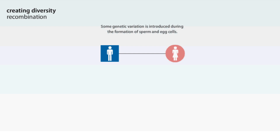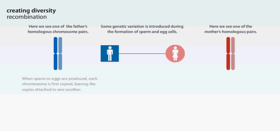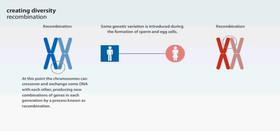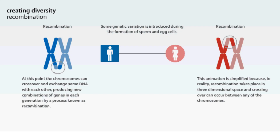Some genetic variation is introduced during the formation of sperm and egg cells. When sperm or eggs are produced, each chromosome is first copied, leaving copies attached to one another. At this point, the chromosomes can cross over and exchange DNA with each other, producing new combinations of genes in each generation by a process known as recombination. This animation is simplified because, in reality, recombination takes place in three-dimensional space, and crossing over can occur between any of the chromosomes.